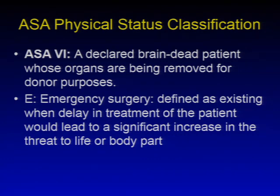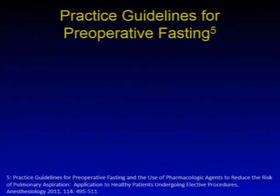To this point we've discussed performing the history and physical, airway exam, ordering indicated labs and preoperative tests, assessing cardiac risk, and assigning physical status. These can all be done days or weeks ahead of time in pre-op clinic. Now we'll move on to things that happen at the time of the procedure and day of surgery, beginning with the practice guidelines for preoperative fasting and NPO status.